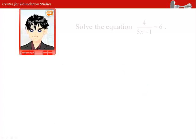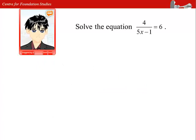Let us take a look at another question. 4 divided by 5x minus 1 equals to 6. This question involves a fraction on the left hand side. We can get rid of the fraction by doing a cross multiplication.